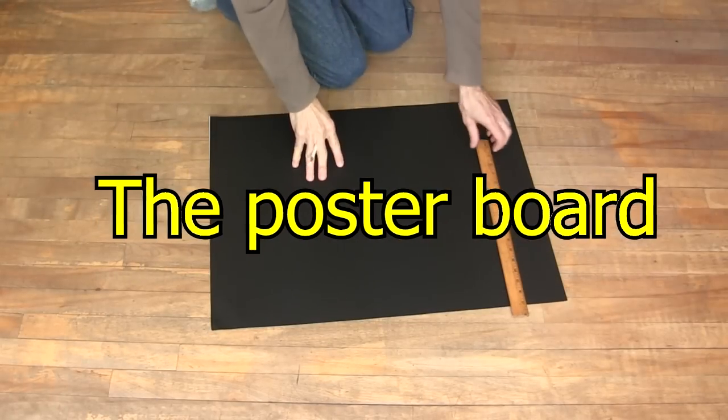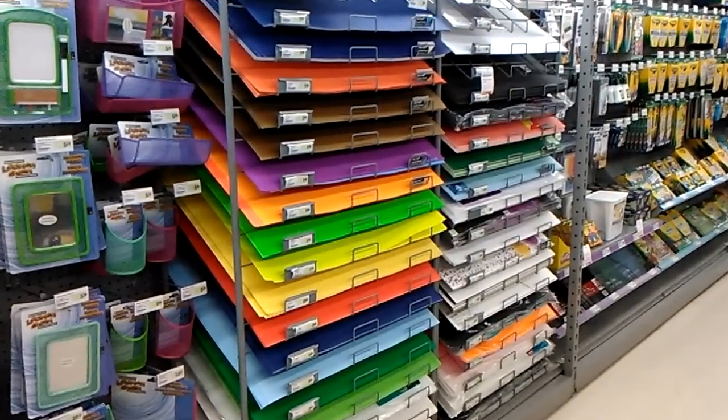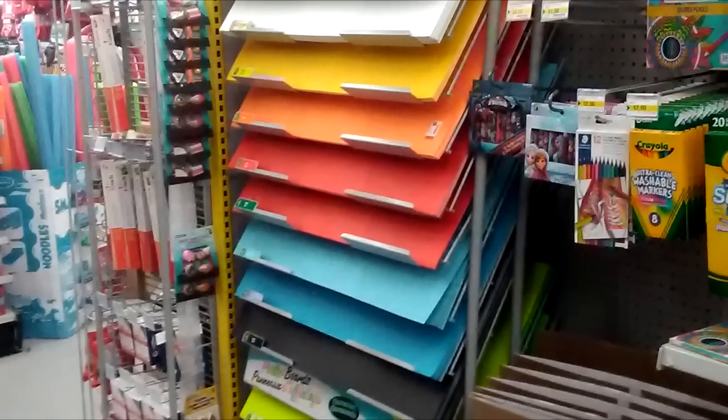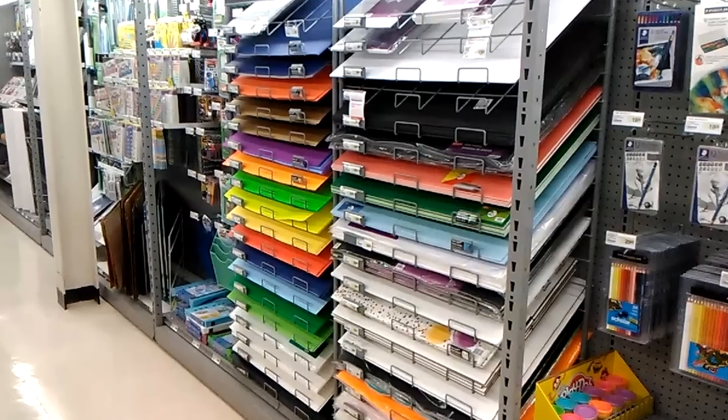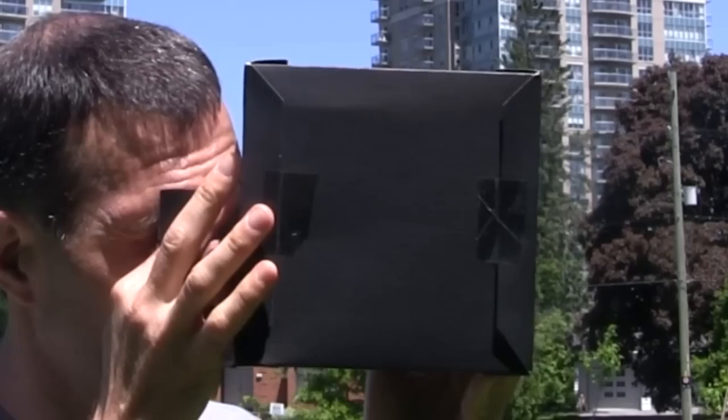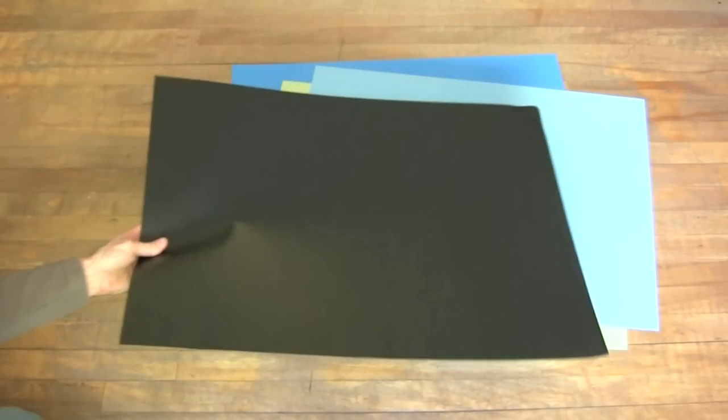It all starts with a sheet of poster board. You can get them in art stores, school and art supply sections in most stores like Walmart and discount stores or dollar stores. The darker the color and the duller the surface the better. That's to have as little light as possible reflecting around inside the camera. Black would be best.